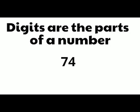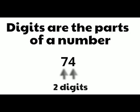Let's look at the number 74. There are two parts, or digits, in the number 74. The number 74 has two digits. Remember, digits are the parts of a number.